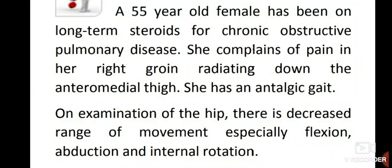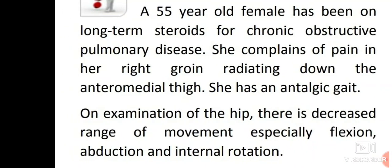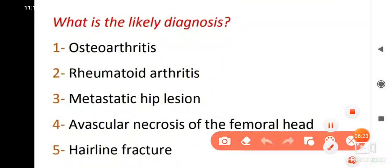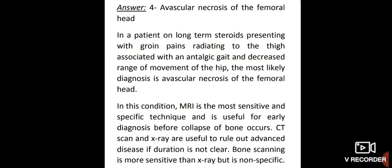A 55-year-old female on long-term steroids for chronic obstructive pulmonary disease complains of pain in her right groin radiating down the anterior medial thigh. She has an antalgic gait. On examination of the hip there is decreased range of movement, especially flexion, abduction and internal rotation. The most likely diagnosis is avascular necrosis of the femoral head — a patient on long-term steroids presenting with groin pain radiating to the thigh associated with antalgic gait.